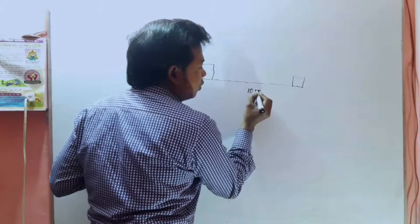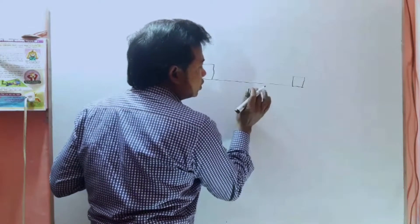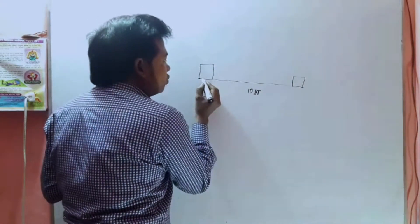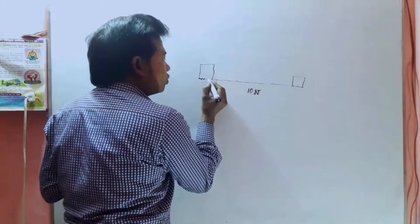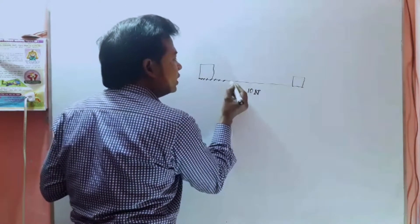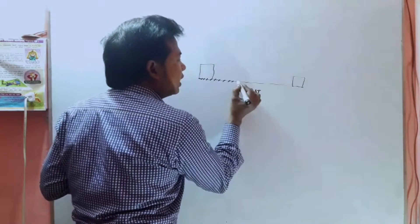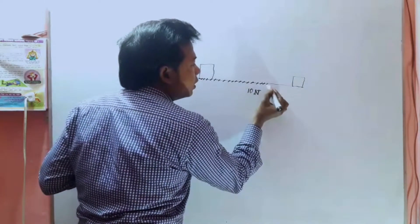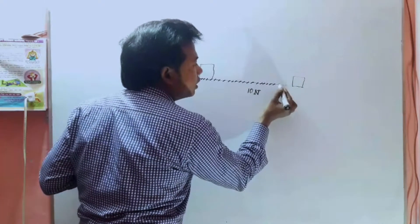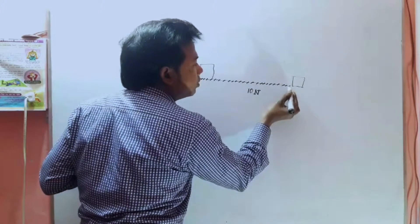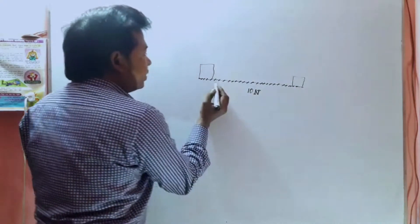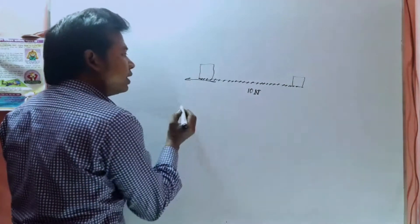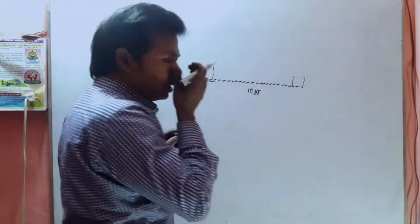Here we will start the block and we will start the block. If you start the block, the block will take 10N. When this is done, there is a written journal to the right, what we refer to as this article. This is the placement of the article.